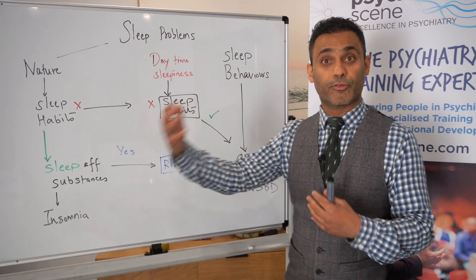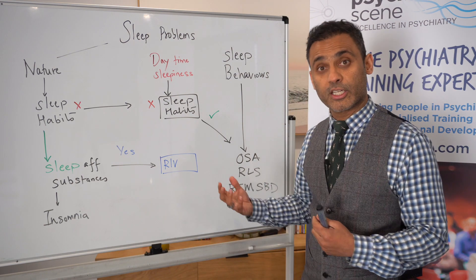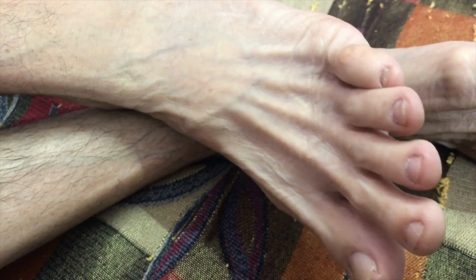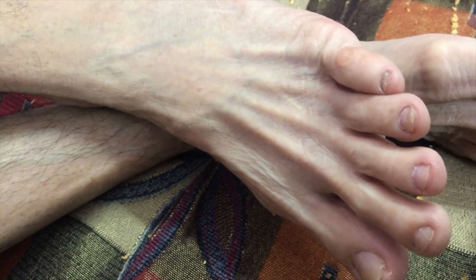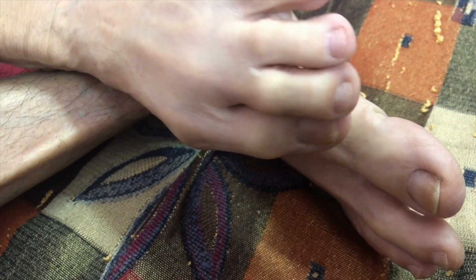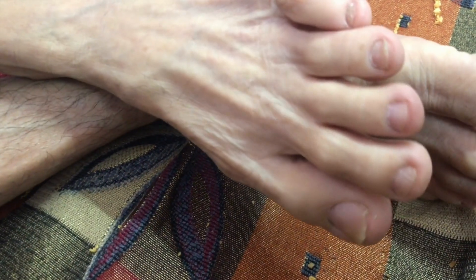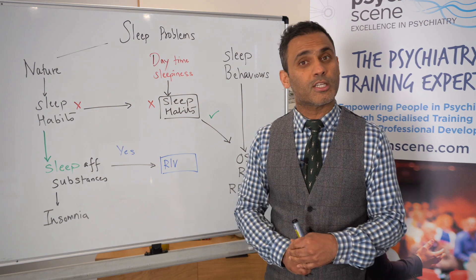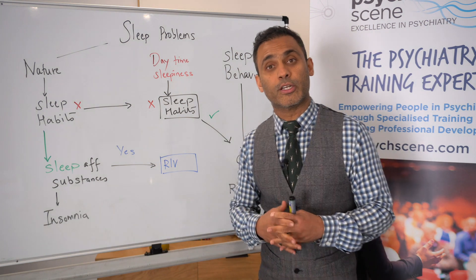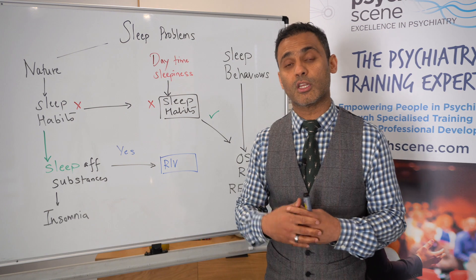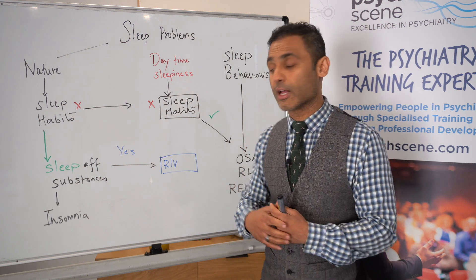If that occurs, referral for a sleep study becomes important. Other conditions such as restless leg syndrome — this is a really unpleasant sensation in the legs where the individual, closer to bedtime, feels like they need to move their legs, and it's relieved on moving. This can be associated with iron deficiency anemia, and treatment often includes dopamine agonists; treating iron deficiency anemia, and at milder levels magnesium may help.